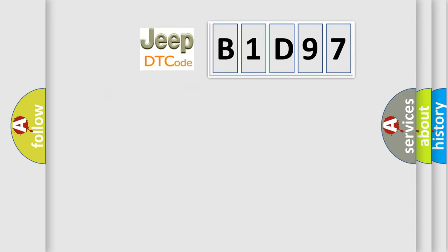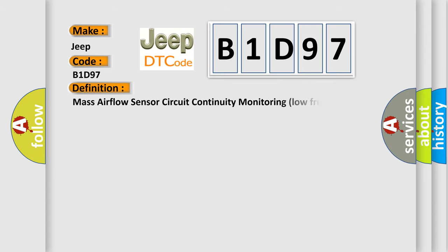So, what does the diagnostic trouble code B1D97 interpret specifically for Jeep car manufacturers? The basic definition is: Mass Airflow Sensor Circuit Continuity Monitoring Low Frequency.